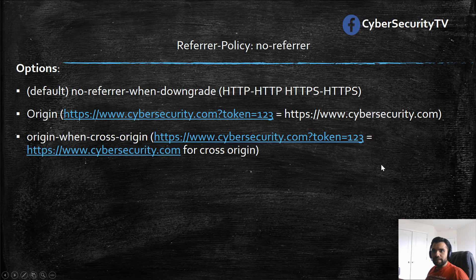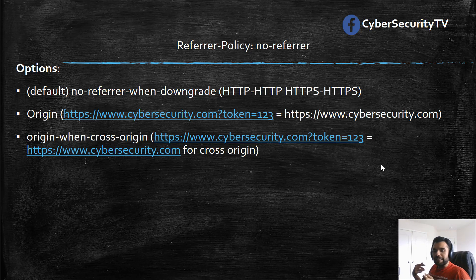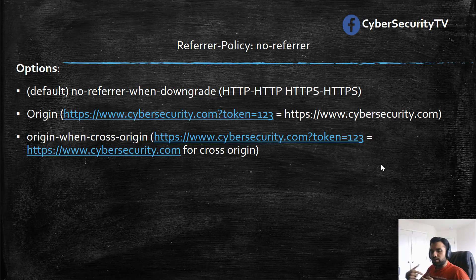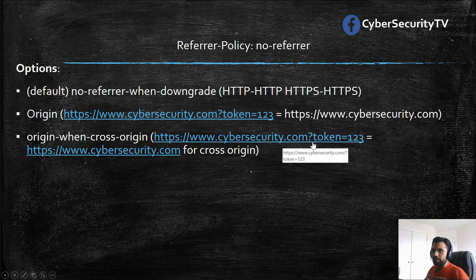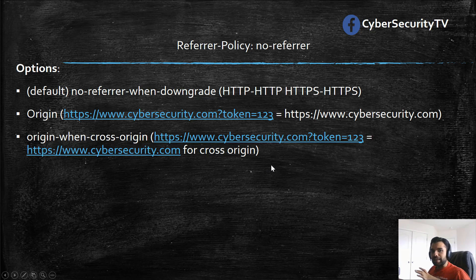The third option is origin-when-cross-origin. So whenever the request goes to a cross origin — in our earlier example, if there is a Google or any third-party link on Facebook and you click on that link, that's a cross-origin request, which we have covered before with cross-origin resource sharing. So it's only going to share the origin — instead of cybersecuretv.com?token=123, it's only going to share www.cybersecuretv.com for cross-origin requests. For the same origin, it's going to send everything.